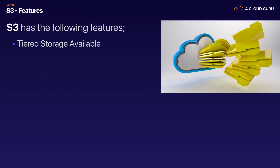S3 has the following features. It has tiered storage — different storage tiers — which is a fundamentally important topic for the Certified Solutions Architect exam, worth about four or five exam points. It also has lifecycle management, which lets you move objects around different storage tiers automatically — for example, move a file after 30 days, or archive it to Glacier after 90 days. It also allows versioning, so you can have multiple versions of objects in your S3 buckets.